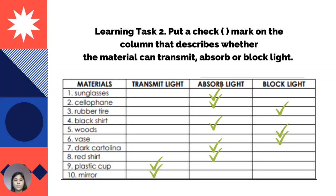These are the correct answers. Number one, sunglasses: absorb light. Two, cellophane: absorb light. Three, rubber tire: block light. Four, black shirt: absorb light. Five, wood: block light. Six, braids: block light. Seven, dark cartolina: absorb light. Eight, red shirt: absorb light. Nine, plastic cup: transmit light. Ten, mirror: transmit light.